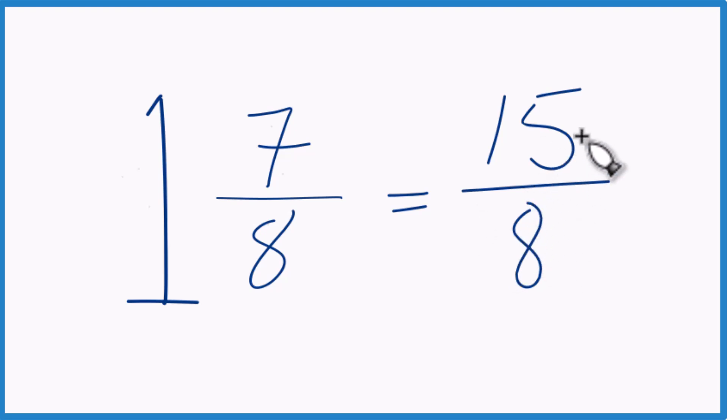This is considered to be an improper fraction because the numerator is larger than the denominator. Let's try it again. So 1 times 8, that's 8. 8 plus 7, 15. That's the numerator. Just bring the denominator across. We end up with 15 eighths.